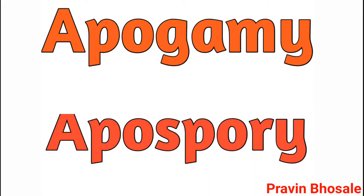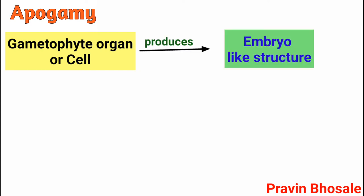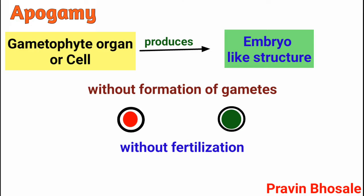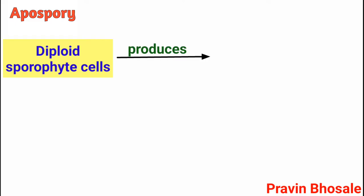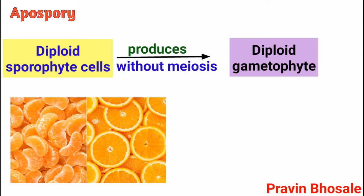Now let's see what is apogamy and apospory. In apogamy, a gametophyte organ or cell produces an embryo-like structure without formation of gametes, meaning without fertilization. In apospory, diploid sporophyte cells produce a diploid gametophyte without undergoing meiosis. Examples include orange and mango.